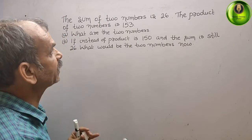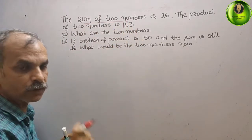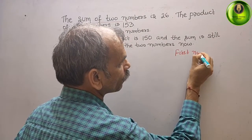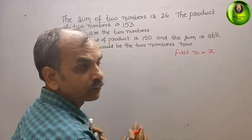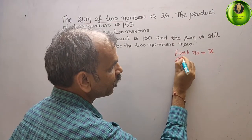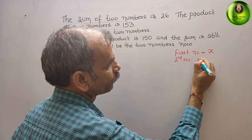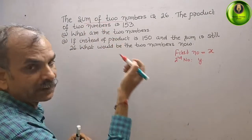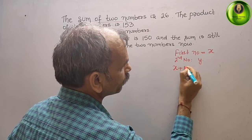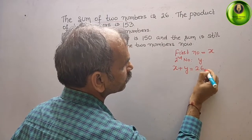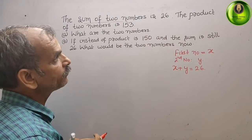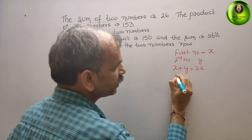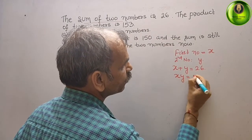First, let's write what is given. Suppose the first number is X and the second number is Y. The sum means X plus Y is equal to 26. And the product of the two numbers is 153, that means X times Y is equal to 153.